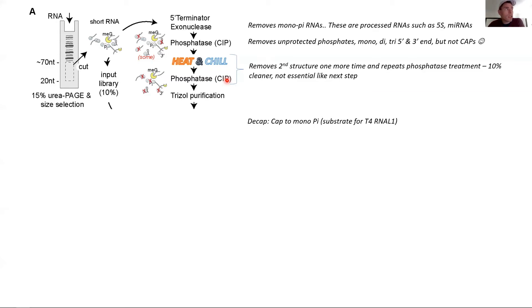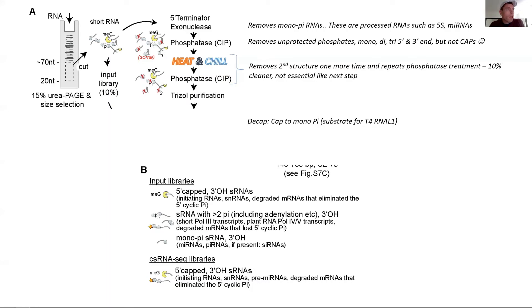We're very fortunate that NEB actually came out with a thermostable CIP, the Quick CIP, and that allowed us now to just use the same enzyme throughout this process. Here we do a TRIzol purification. If you're super low input this is not absolutely essential, but I highly recommend it because you want to really get rid of the CIP.